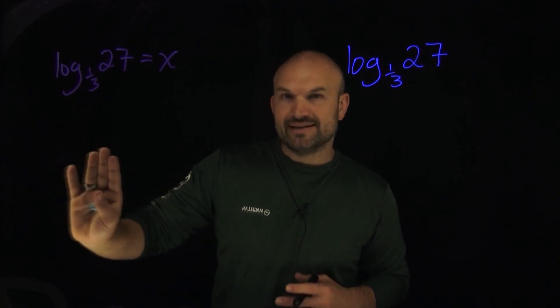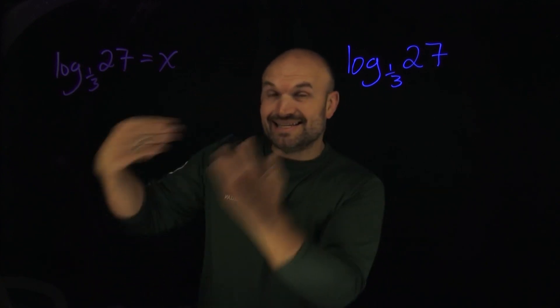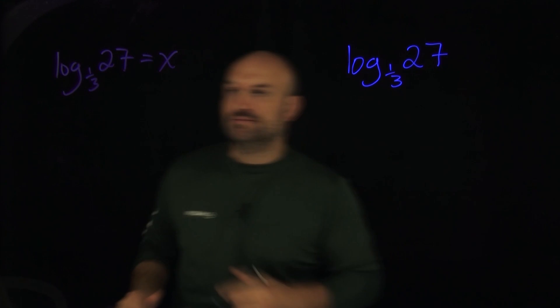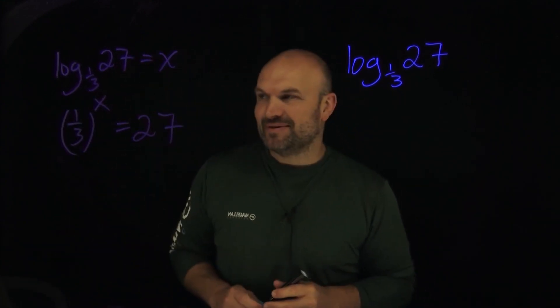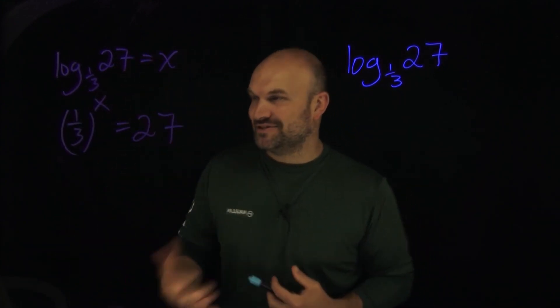So technically what we can rewrite this as is one-third raised to the x is going to equal 27. Now there's where you can might be able to get some difficulties because if you're thinking about this, you're like, all right,